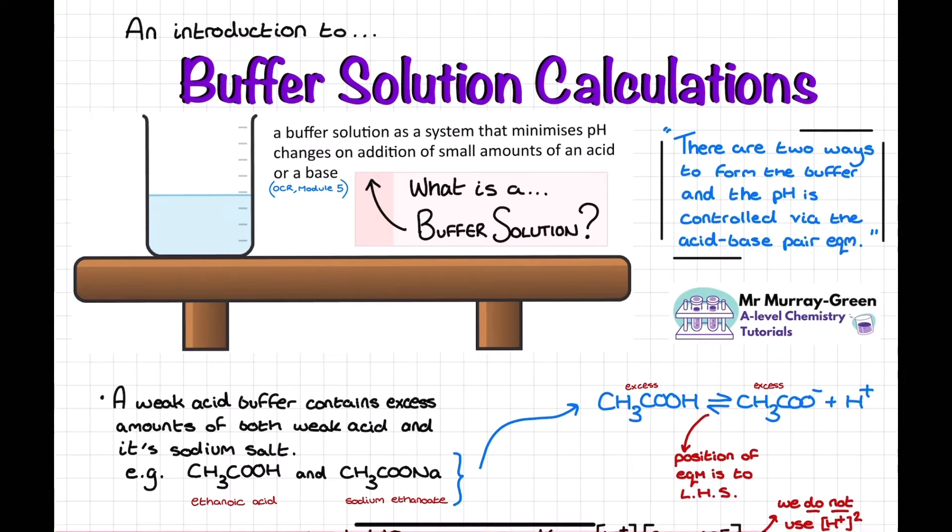Now if we delve into module 5 of the OCR specification looking for buffers, we find a buffer solution described as a system that minimizes pH changes on addition of small amounts of an acid or a base. But what lots of people still struggle with even after they've covered this content in a classroom is: if I was to look at a buffer solution close up right now, what would it be? What's inside the solution? What's the setup present there? I'm going to start this tutorial with a quick look at that and then we're going to delve into the different types of buffer calculation you can be presented with in an examination.